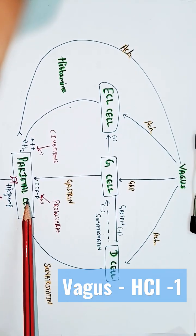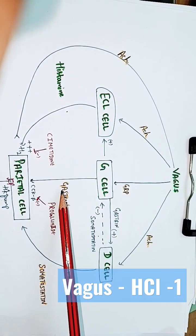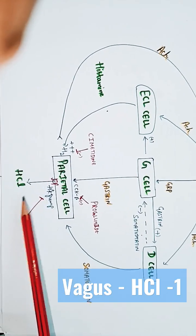So, the three main stimuli for parietal cell are directly by vagus nerve, then via histamine and via gastrin. These are the three main stimuli for parietal cell to produce HCL.